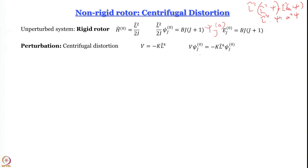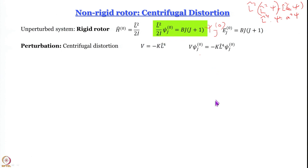For centrifugal distortion operating on the wave function, we work with the uncorrected zeroth-order wave function. We get −k·L⁴ operating on ψ_j⁰. Remembering that L²/2I operating on ψ_j⁰ gives B·j(j+1), we can rewrite: L² operating on ψ_j⁰ gives 2I·B·j(j+1)·ψ_j⁰.